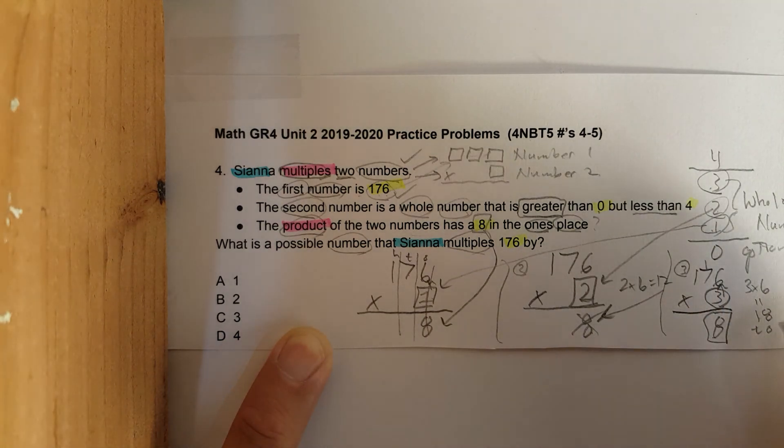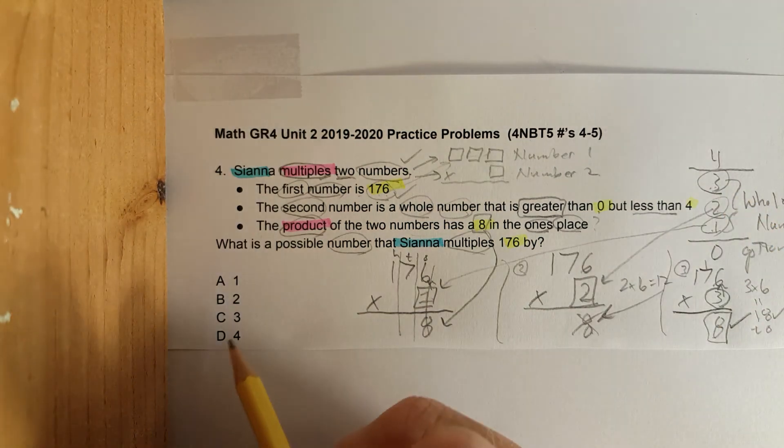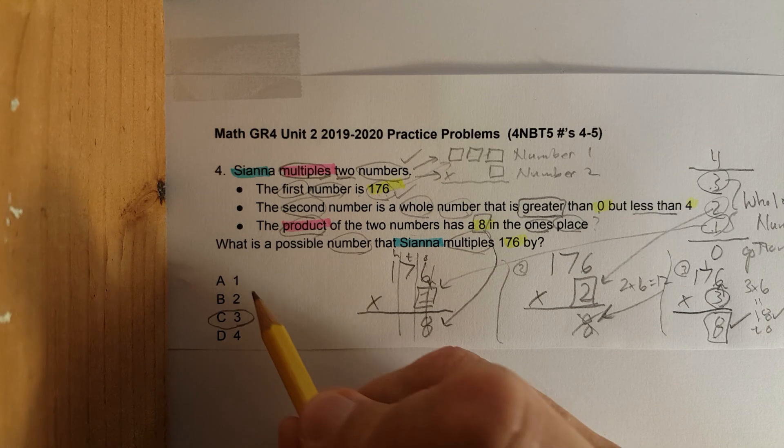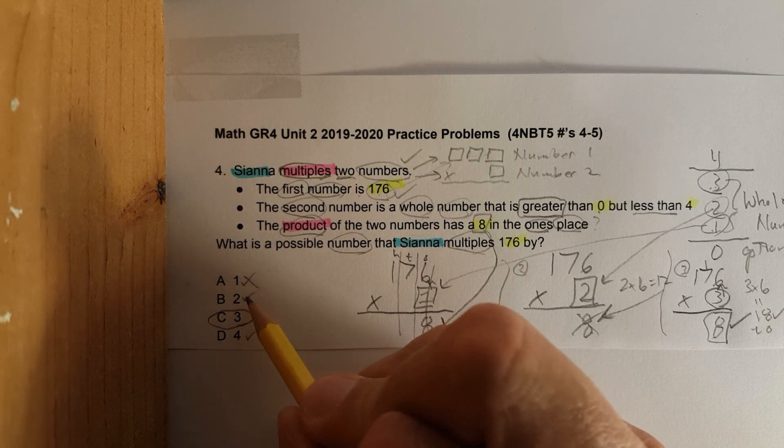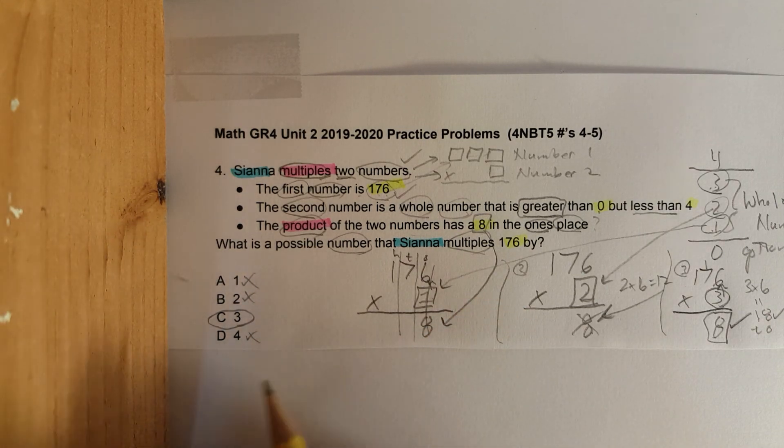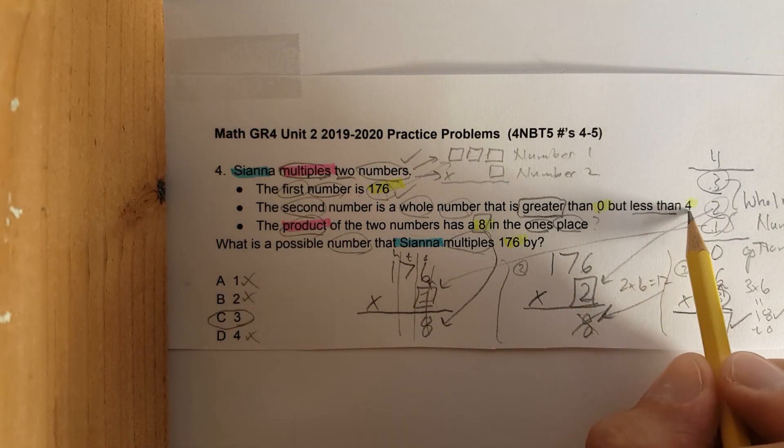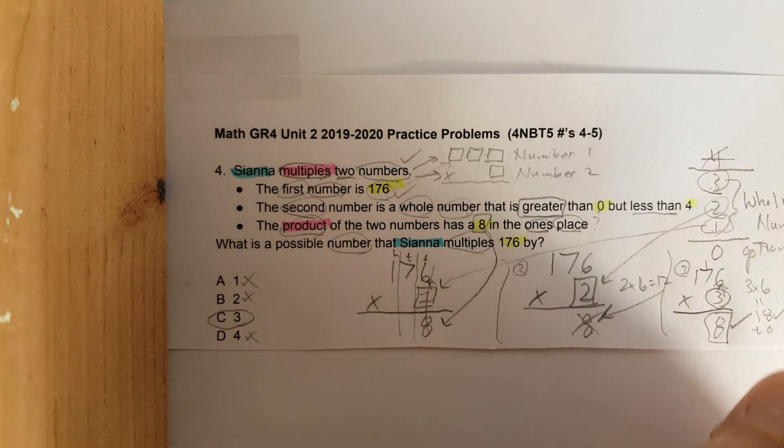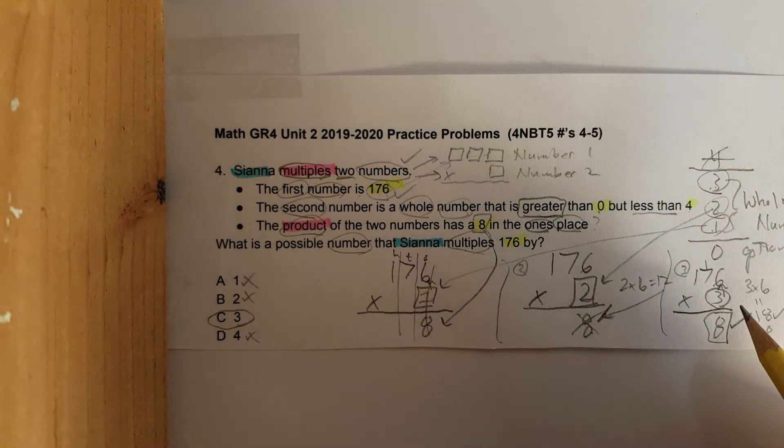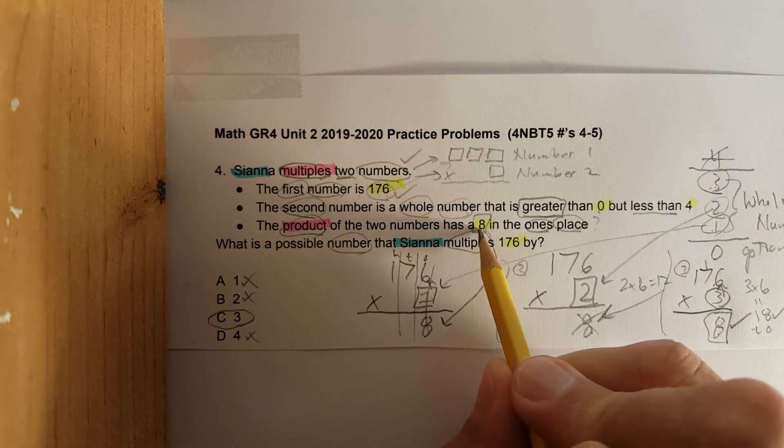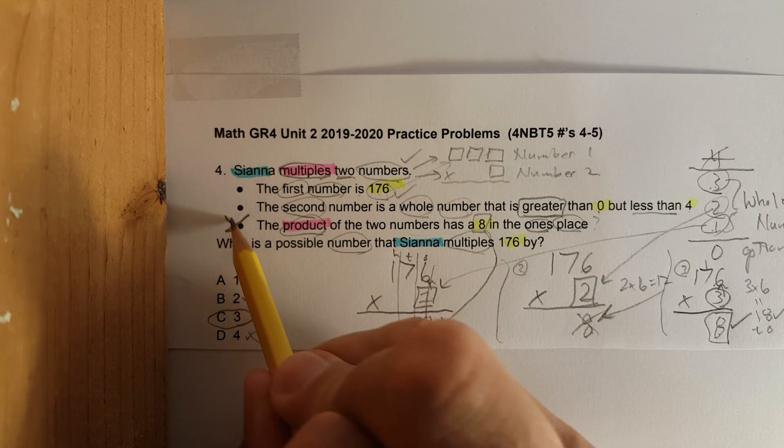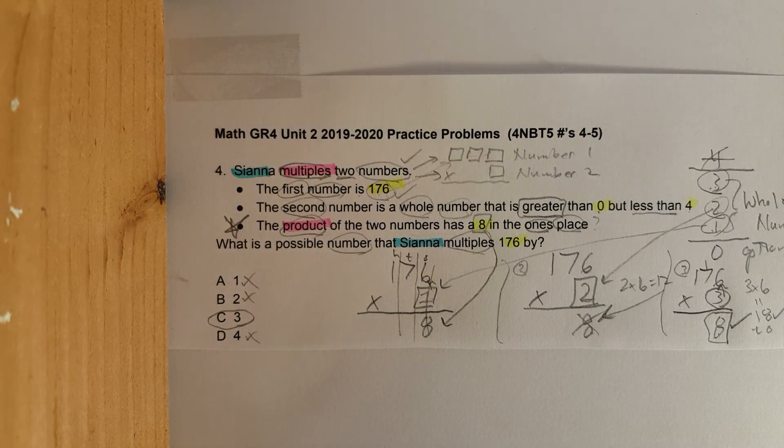So look, check, check. The correct answer is three. So we had to go through each single one and eliminate them. Notice four is not even an option because it says less than four. So why even do four? The only answer is three. Why? Three times six is 18. The eight stays in the ones place. And that's exactly what they're asking for right here. That was five minutes, a little faster. Enjoy. Have a good one. And remember, keep practicing.